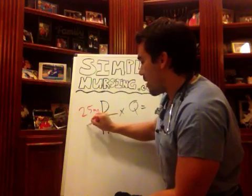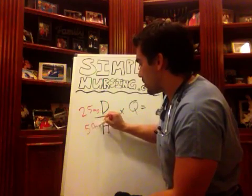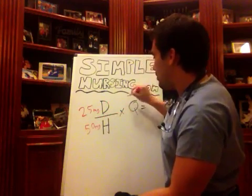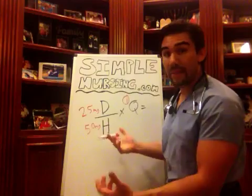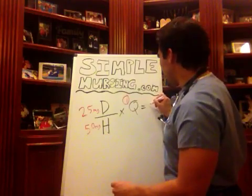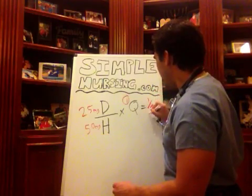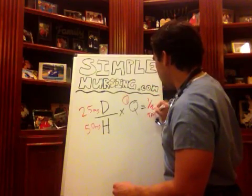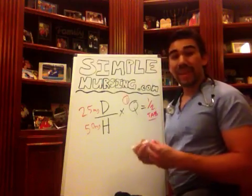We have 50 milligrams times your one tab, and it comes out to basically half a tab on your scored tab.